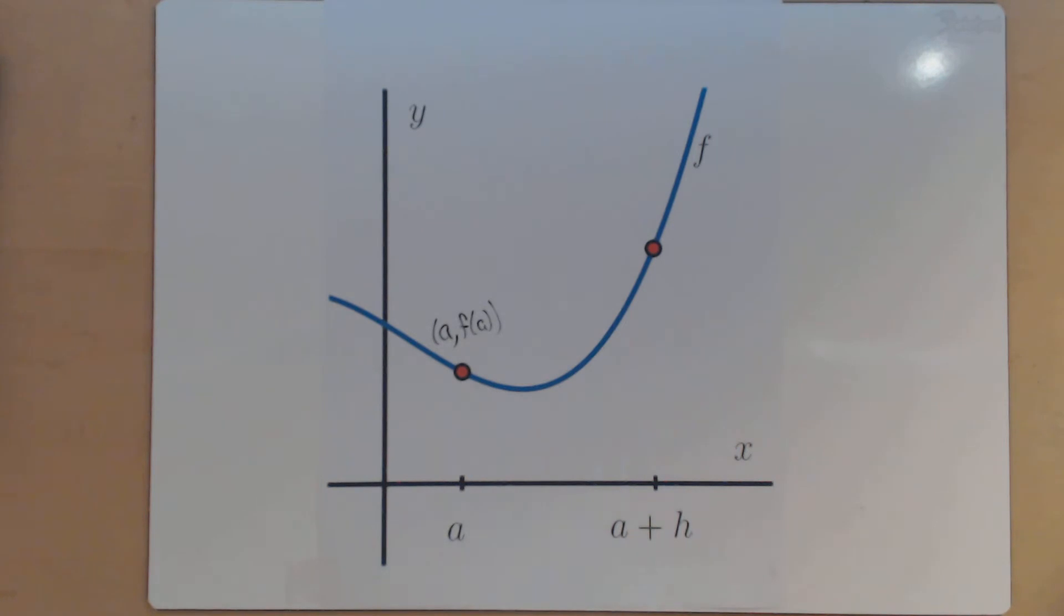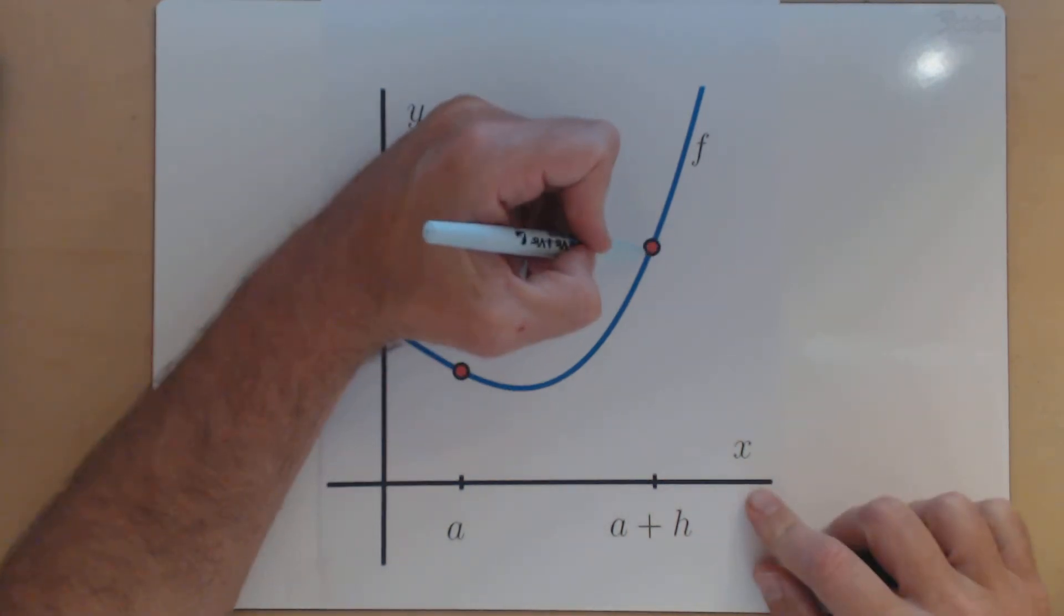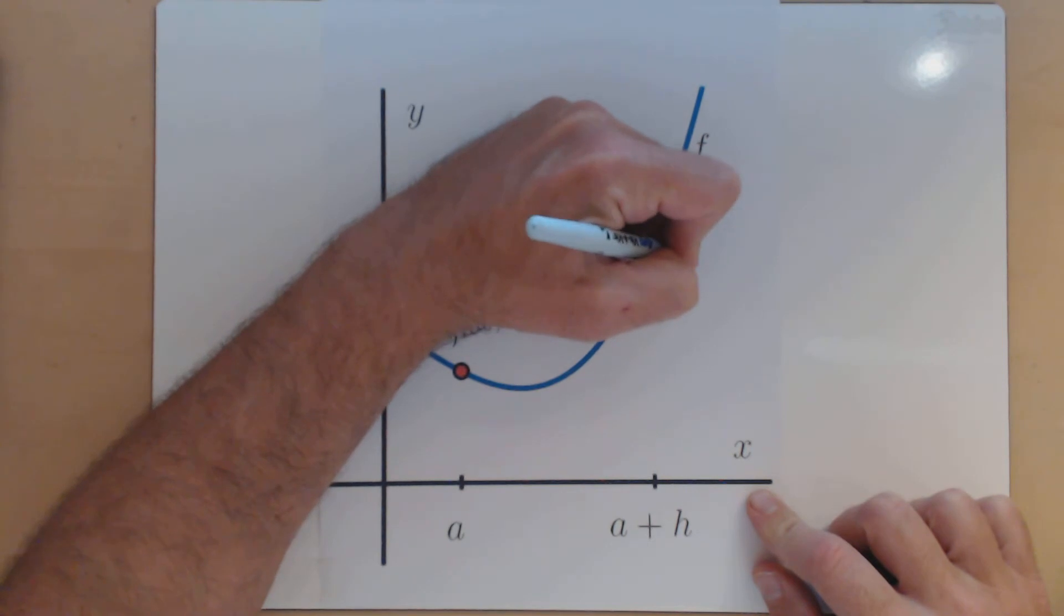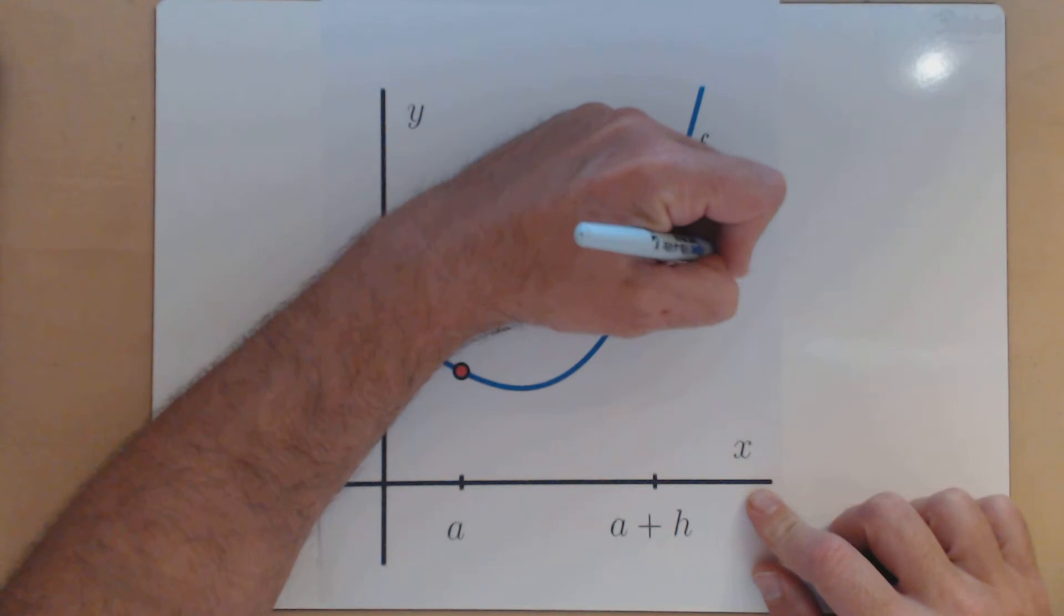Similarly, this point here, since its input is a plus h, this is going to be the point a plus h comma f of a plus h.